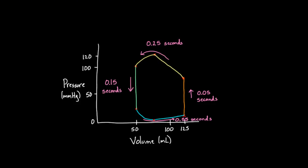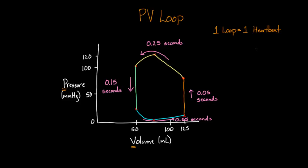We have our pressure volume loop, and I wanted to explore this a little further. A nice place to start might be with the name: pressure volume, or PV loop. You've got P and V on the axes, so there's your PV. And the loop — one loop in this sense — is really going to represent one heartbeat. You start at one point and go all the way around through systole and diastole and back.